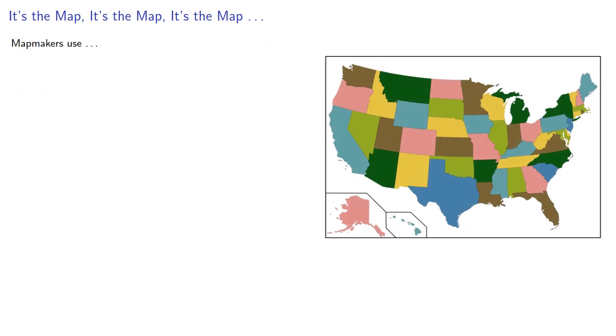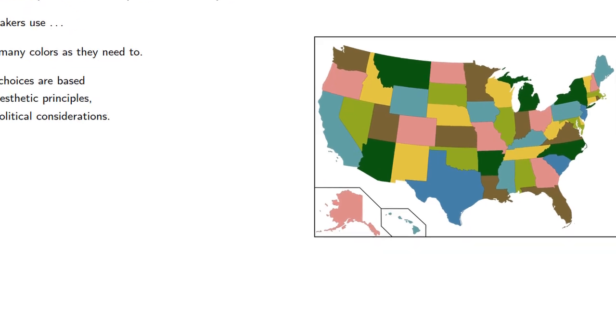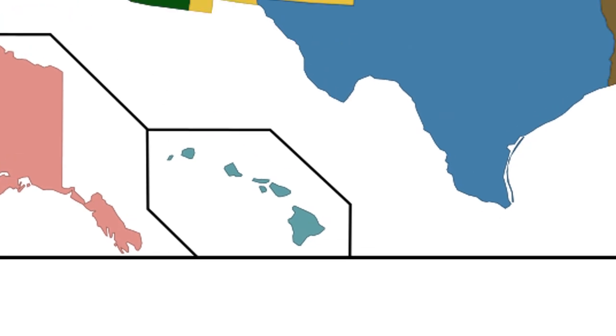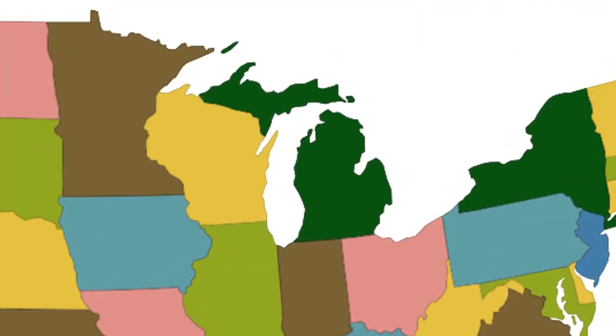Mapmakers use as many colors as they need to. Color choices are based on aesthetic principles as well as political considerations, like having all islands of one state have the same color, or having two parts of a state separated by water have the same color. So a normal person wouldn't worry about how many colors are required. But mathematicians are not normal people.